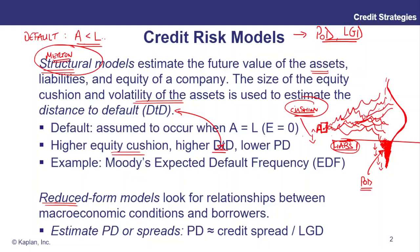The higher the DTD — distance to default — maybe one or two standard deviations away in terms of asset value, the lower the probability of default (POD). Moody's Expected Default Frequency uses this idea. In simple terms, it assesses the distance to default for different firms and looks at how many actually default. So for all issuers with a distance to default of roughly two standard deviations, about 3% default — giving us an expected default frequency that informs our probability of default for that particular distance to default.